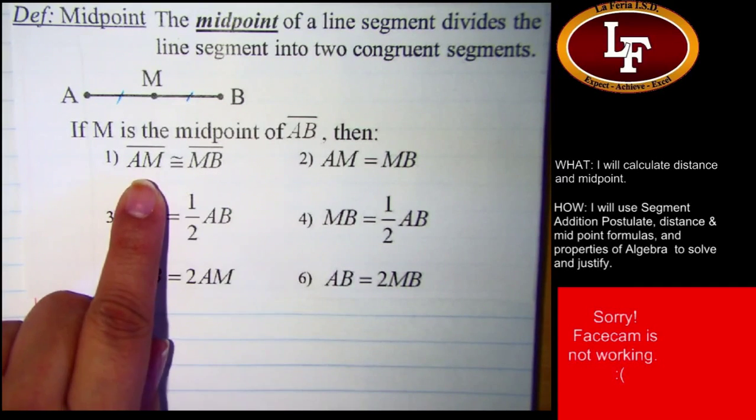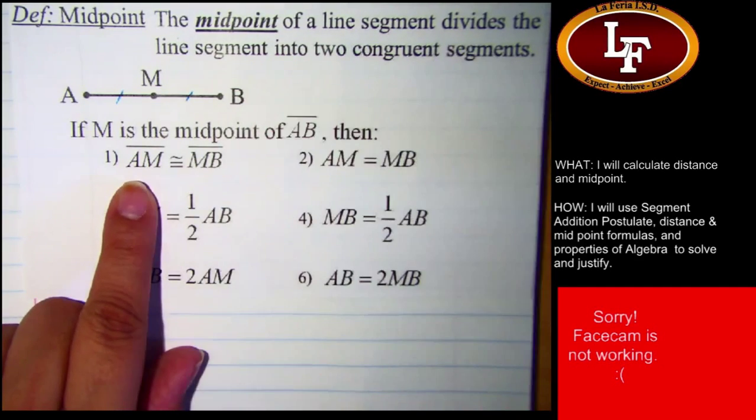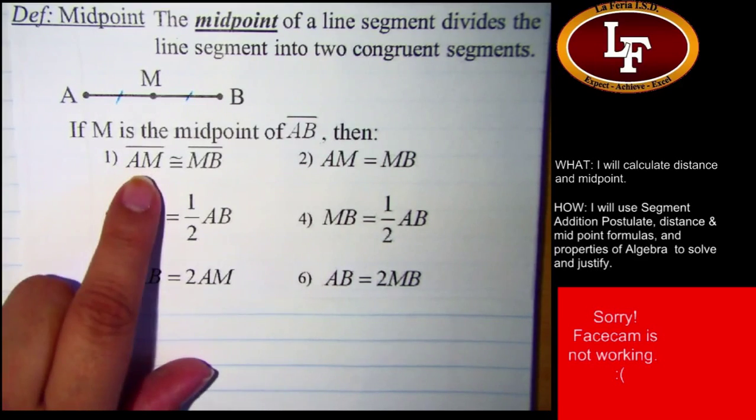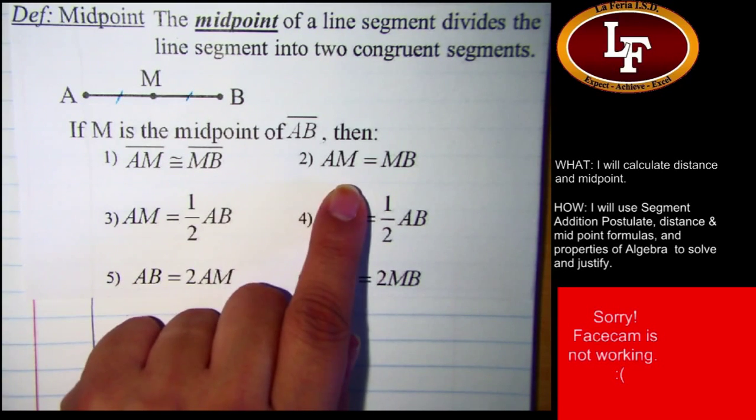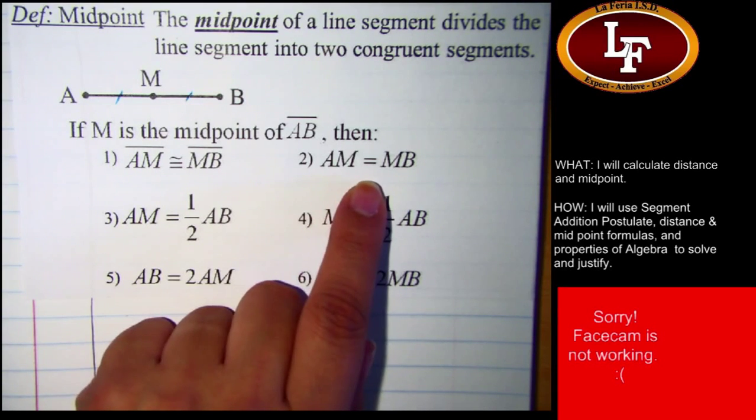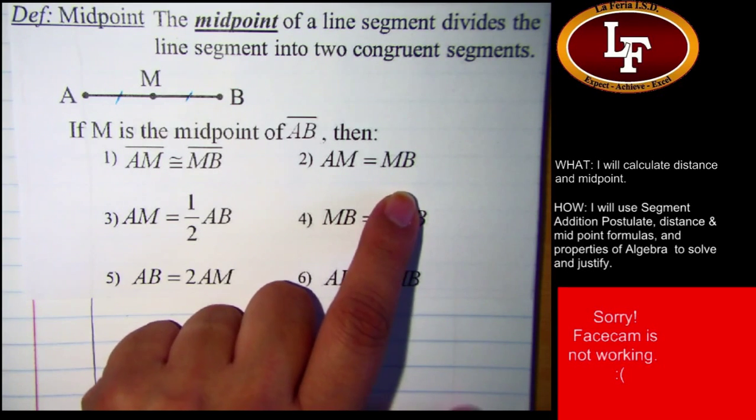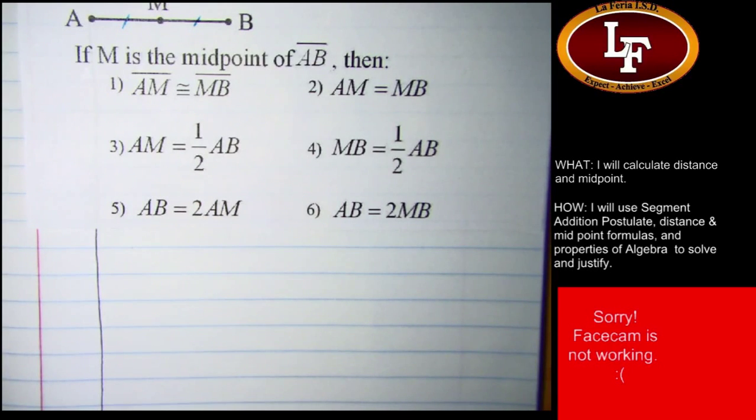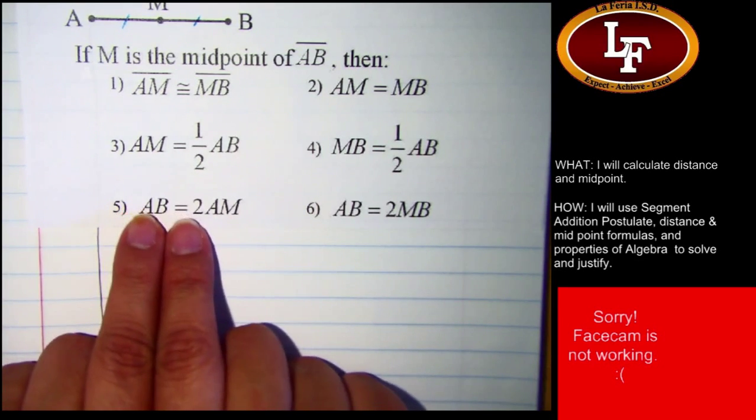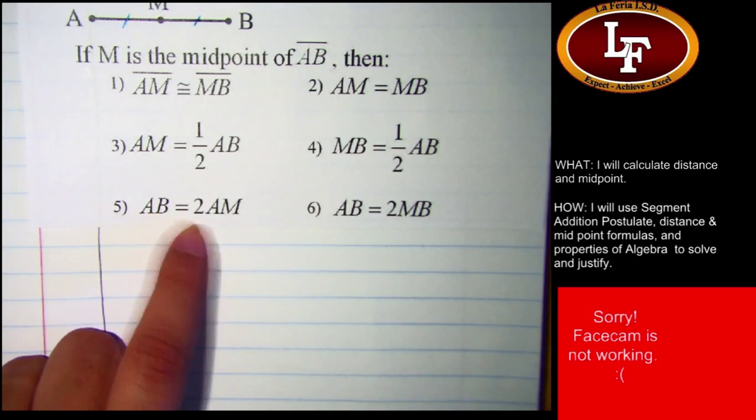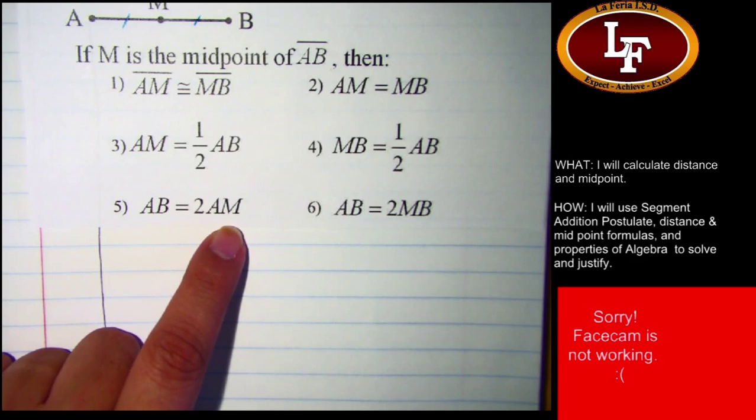This idea that the midpoint is right in the middle and it divides it into congruent segments has these implications. The first one is that one segment is congruent to the other. Looking at this figure, our model figure, this says that line segment AM is congruent to line segment MB. Which implies that their measures are equal. The distance between A and M is equal to the distance between M and B. So far, no big deal, right?